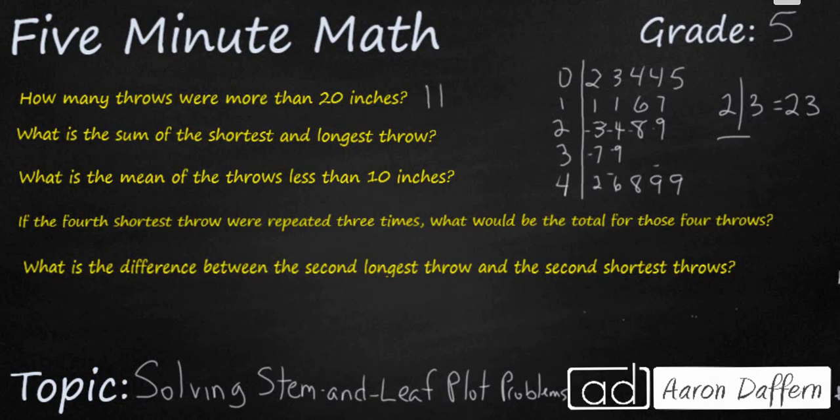What is the sum of the shortest and the longest throw? Well you've got 2 inches and 49 inches, so that's going to be 51 inches.